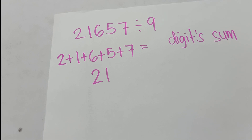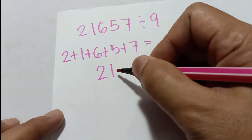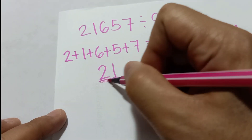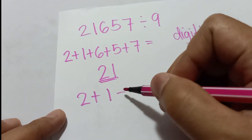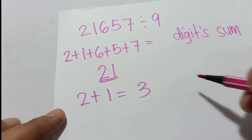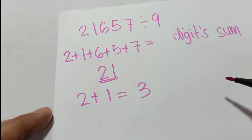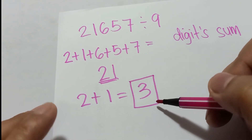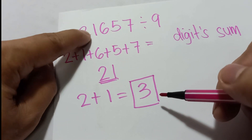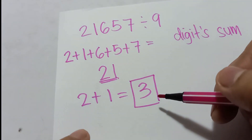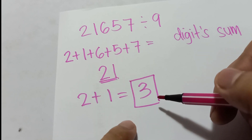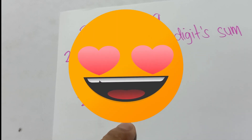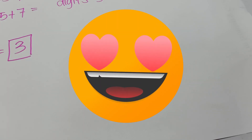Do not stop until you get a single digit — keep on adding. So 21 means 2 plus 1, which equals 3. Therefore, 3 is our remainder. So 21,657 divided by 9 has a remainder of 3.